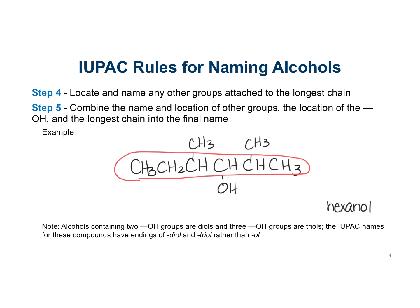You need to locate and name any other groups attached to the longest chain, and you still want the OH to have the lowest number possible. So we number closest to the OH: one, two, three, four. Then you put the substituent name in front of hexanol. There are two methyl groups - dimethyl - and use a dash between a word and a number. The alcohol is at position three, and the methyls are at positions two and four. So the name is 2,4-dimethyl-3-hexanol.